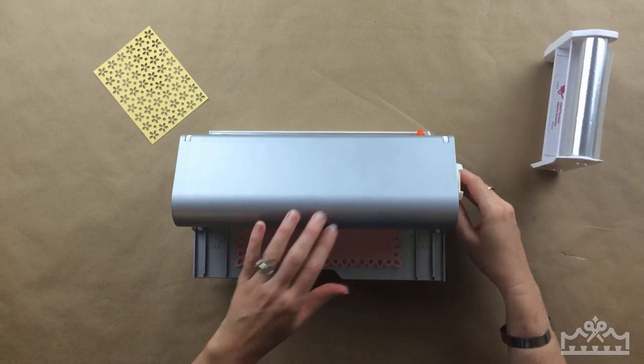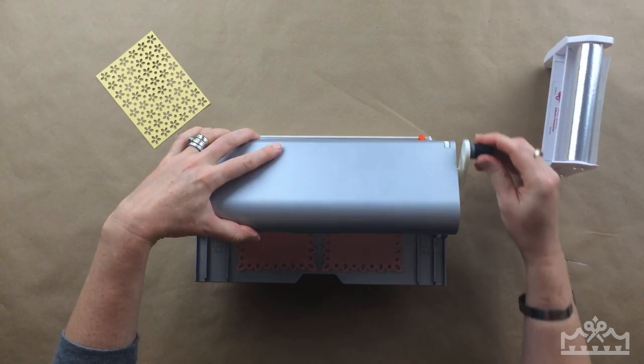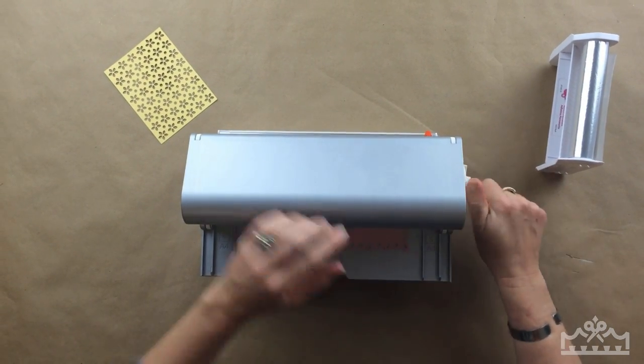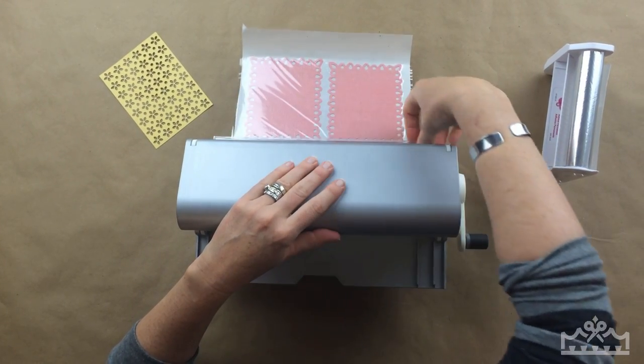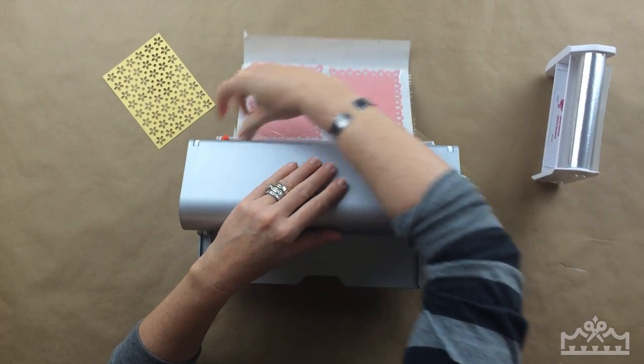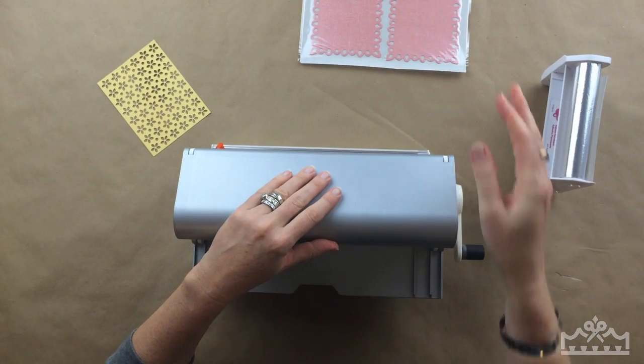You pull out the handle and it's going to lock into place and it works just like our standard Creative Stations. So I can roll it right through, use the little trimmer, and I've got adhesive on my project.